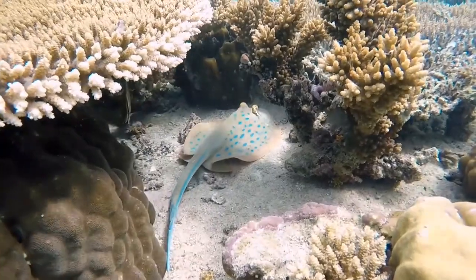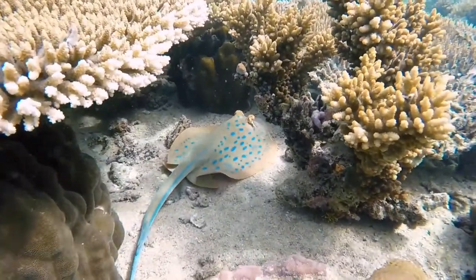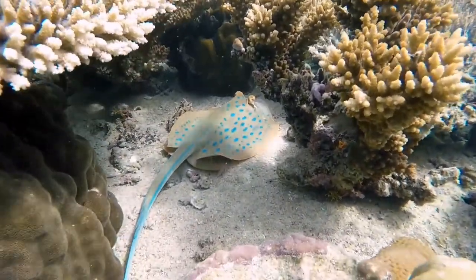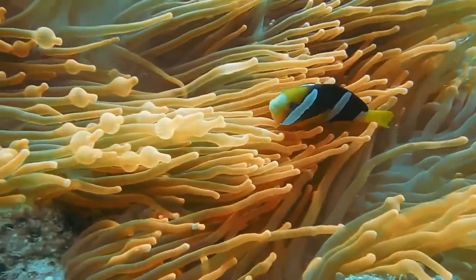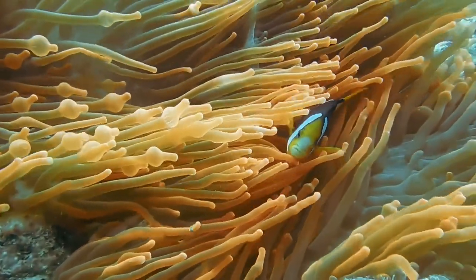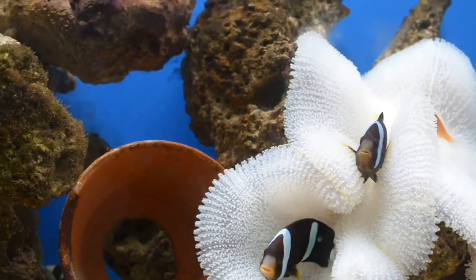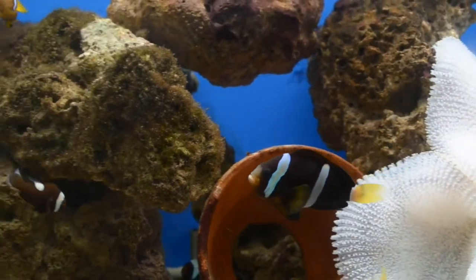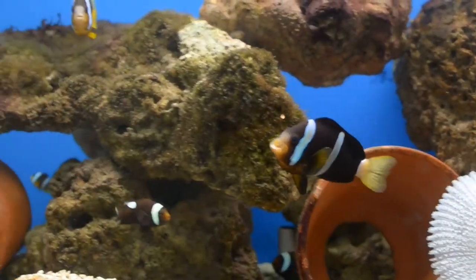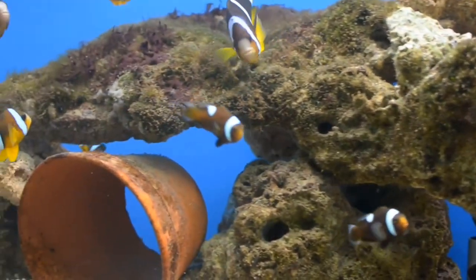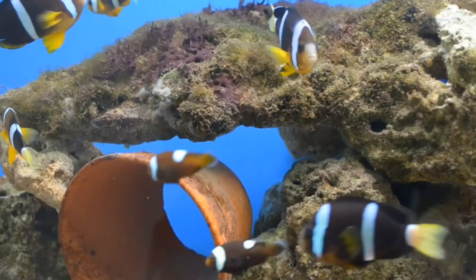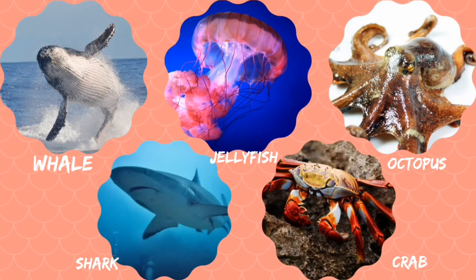Sea and ocean are examples of marine habitat. They together form the largest habitat on planet earth. It is home to a variety of organisms, from tiny plankton to the largest animal in the world, the blue whale. Whale, jellyfish, octopus, shark and crab are found in marine habitat.